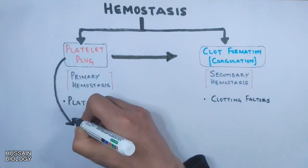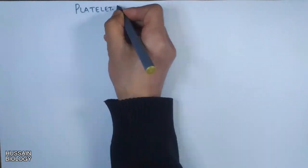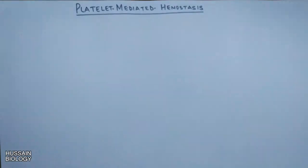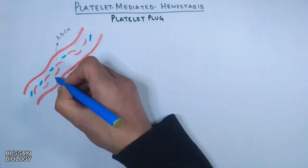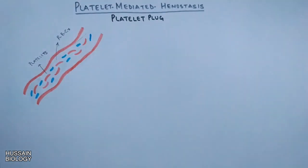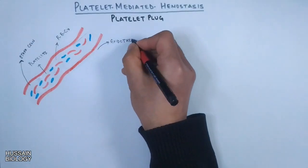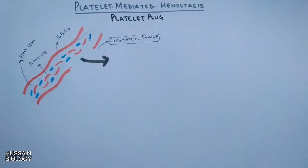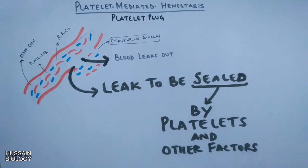In this particular video we will be discussing about the platelet-mediated hemostasis, which involves the formation of a platelet plug. In the blood vessel, blood flows through it — red blood cells shown in red and platelets shown in blue — along with other blood components. When there is endothelial damage, blood leaks out of the vessel, and this leak is sealed by platelets and other factors in the process of platelet-mediated hemostasis.